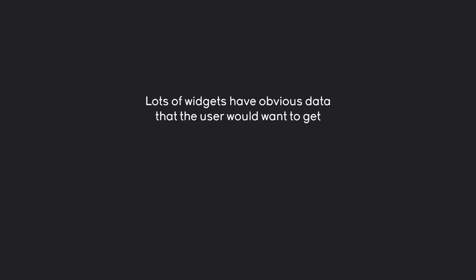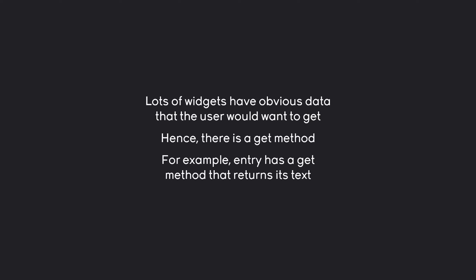Lots of widgets have fairly obvious data that the user would want to get, so we have a dedicated method for it. The best example here is the entry widget — if we run the get method on it, it is going to return the text inside of that widget. And that is the easiest way to get data from a widget.